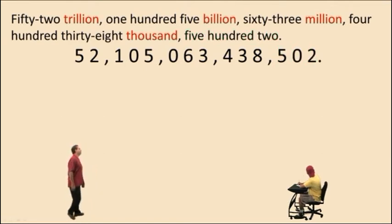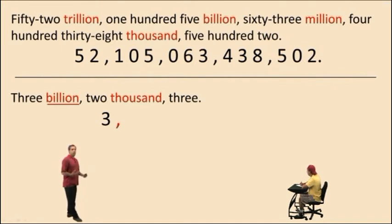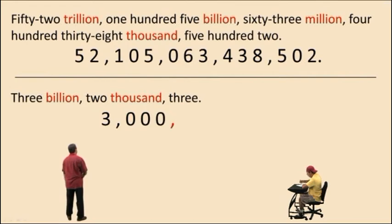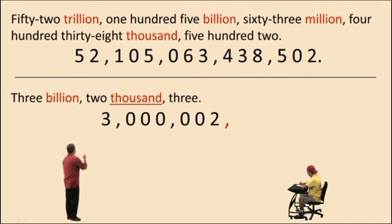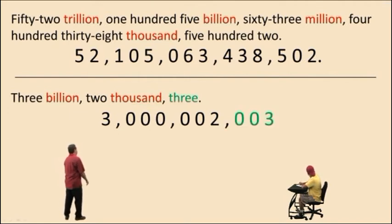Let's try another one. Three billion. Now, notice here, we do not have any millions, but we still have to represent that period using three zeros. So we have zero millions. But we do have two thousand. Notice that we put two zeros in front of the two because we have to have three digits within each period, except for the first one, remember. And then we have three for our last period, in our ones period. There we go.